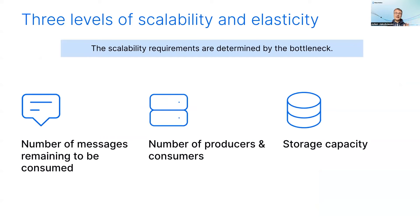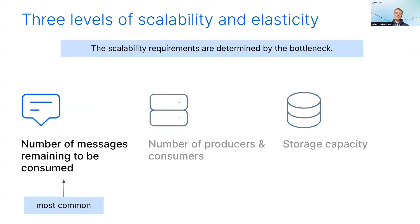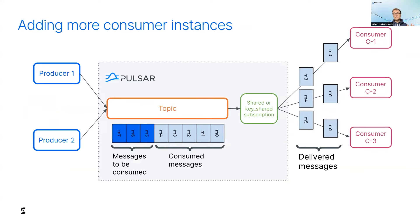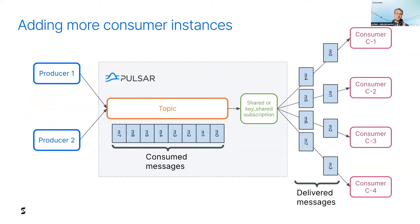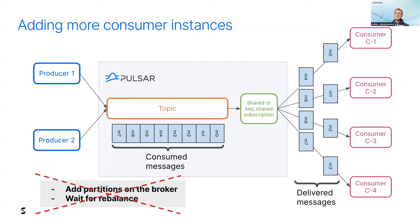The scalability and elasticity requirements are determined by the bottleneck you have to address. If your bottleneck is the number of messages remaining to be consumed in a topic, then you need to scale on the consumer side. When the bottleneck is the number of topics or the number of connections with clients, then you need to add more processing power to the Pulsar cluster. And when the bottleneck is the storage capacity, then you need to add more storage. With Pulsar, you just have to add new consumers — that's all. In Kafka, you need to add a new partition to the topic and rebalance data across partitions. You don't have this issue with Pulsar, and all of that while preserving the ordering guarantee, unlike traditional messaging brokers.